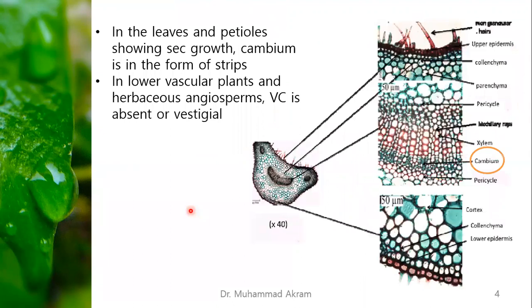In the leaves and the petioles that show secondary growth, cambium is present in the form of strips — small patches, not a complete cylinder. In lower vascular plants and herbaceous angiosperms, vascular cambium is absent or vestigial, or sometimes completely absent.